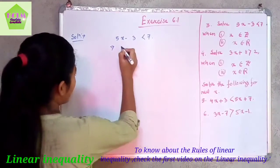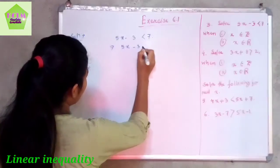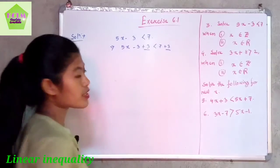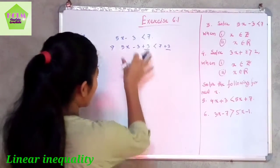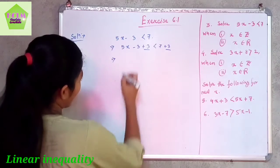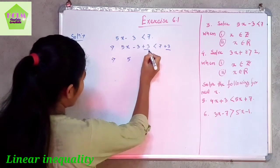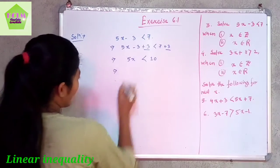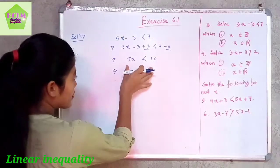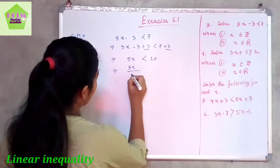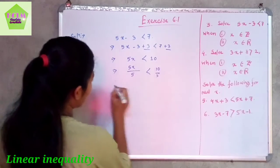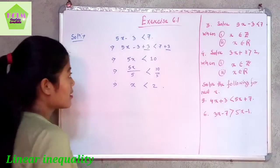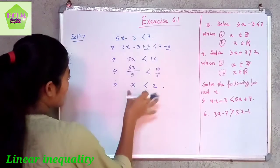We add plus 3 on both sides of this inequality to balance it. The minus 3 and plus 3 cancel out, giving us 5x less than 7 plus 3, which is 5x less than 10. We then divide by positive 5 on both sides, giving us x less than 2.